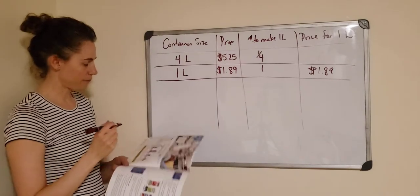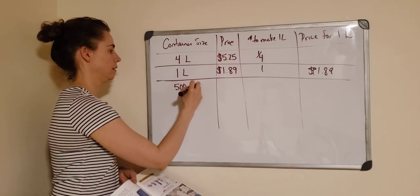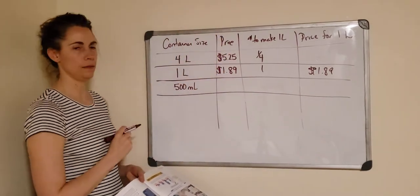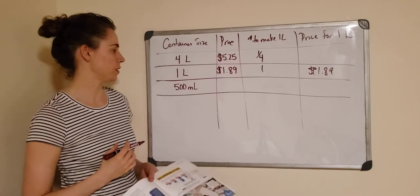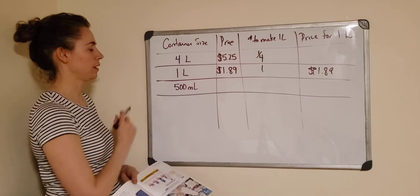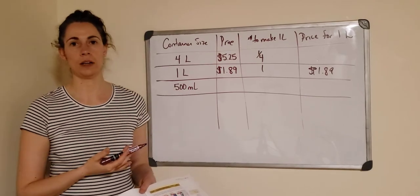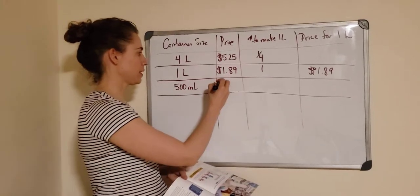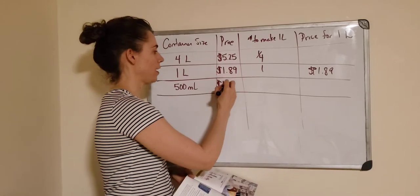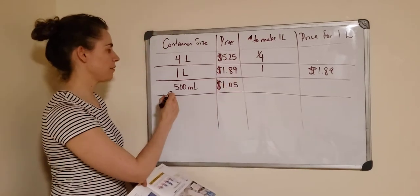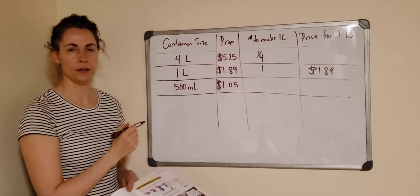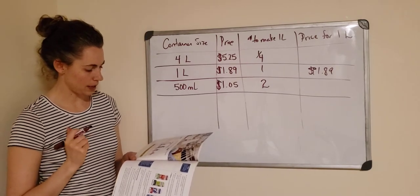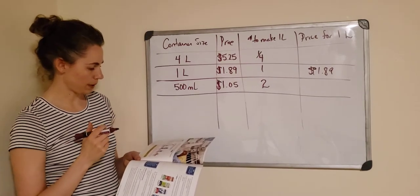Next one is 500 milliliters. We know how many milliliters are in one liter - a thousand. So if we have 500 milliliters, that would be half of a liter. The price they tell us is $1.05. And how many of these would it take to make up a liter? Two. We would need two of them.